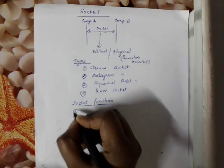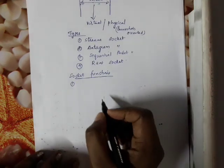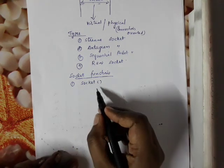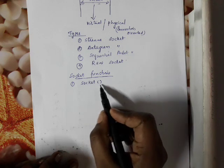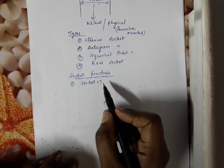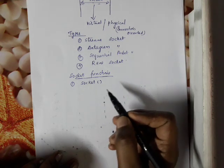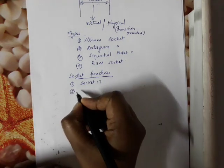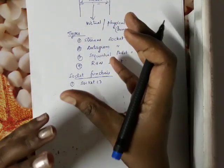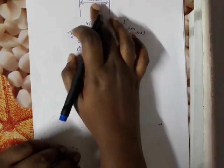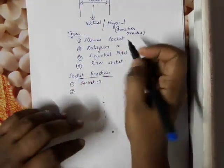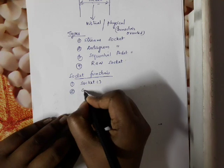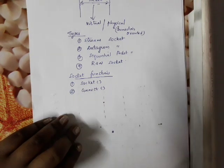The first socket function is socket create. The socket create function creates a new socket. Using this function we can create a socket. The second function is connect. Connect is used to make a physical connection. We use the socket and then connect.